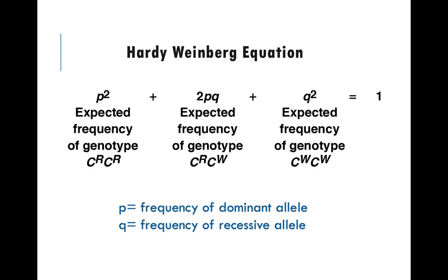Just as a review, the p squared value is the expected frequency of the genotype of the red allele. So 2pq is the expected heterozygous genotype.